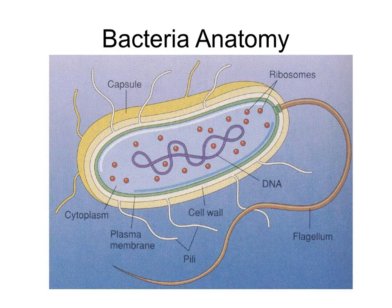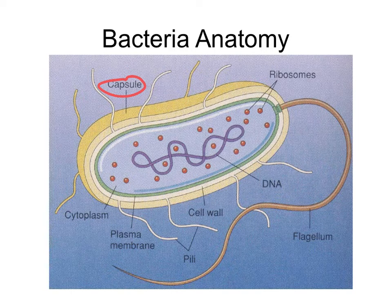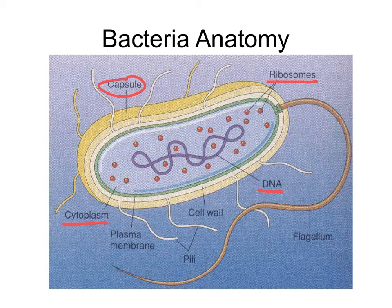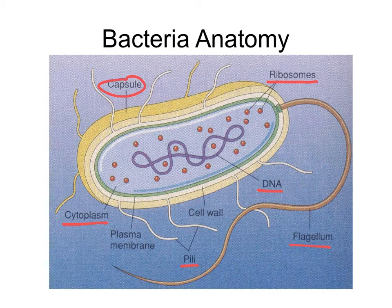A bacterial cell is less complicated than a eukaryotic cell, but it does have a few major parts. There's usually a capsule around the outside. Within the bacteria, there's fluid called cytoplasm, which contains DNA — usually found in circular form — and ribosomes, which are responsible for manufacturing proteins. Bacteria also often have pili, which allow them to send DNA to other bacterial cells or move, and sometimes a flagellum, a long tail that also helps with locomotion.